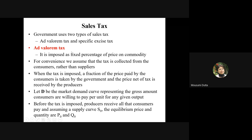Ad valorem tax is imposed as a fixed percentage of price on the commodity. If P is the price of the commodity, the tax will be P times t, where t is the tax rate and P is the unit price. So tax is charged on unit price as a percentage of unit price — it equals P multiplied by t.